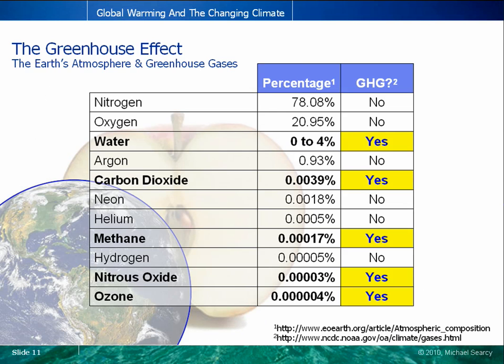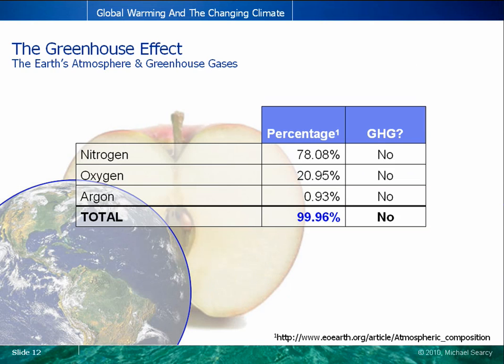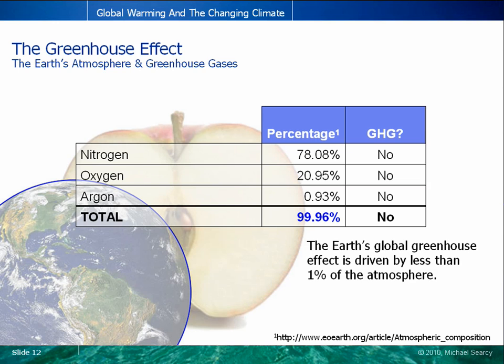Even then, not every gas in the atmosphere contributes to the planet's greenhouse effect. The primary greenhouse gases are water vapor, carbon dioxide, methane, nitrous oxide, and ozone. Nitrogen, oxygen, and argon comprise over 99% of the Earth's atmosphere, and none of these gases is considered a greenhouse gas. So the Earth's greenhouse effect, which is so influential in moderating the planet's temperature, is driven by less than 1% of the Earth's atmospheric gases — quite a responsibility for such a small portion of our atmosphere.